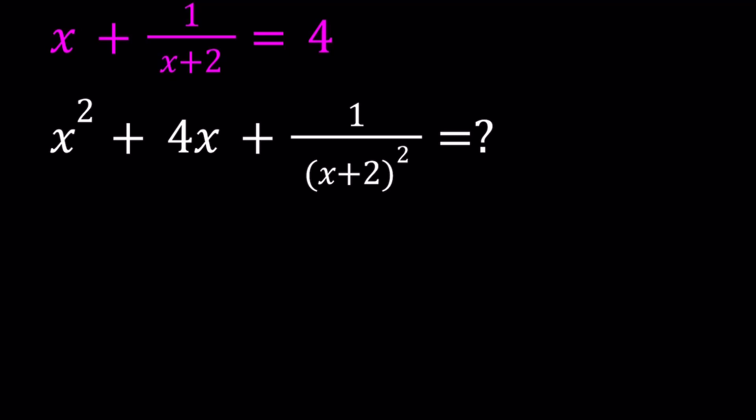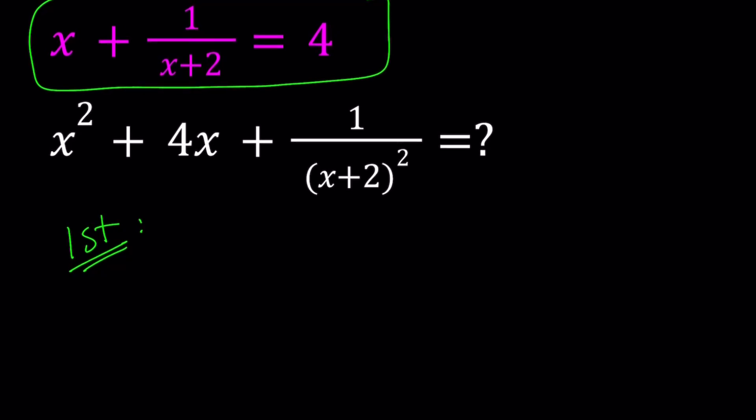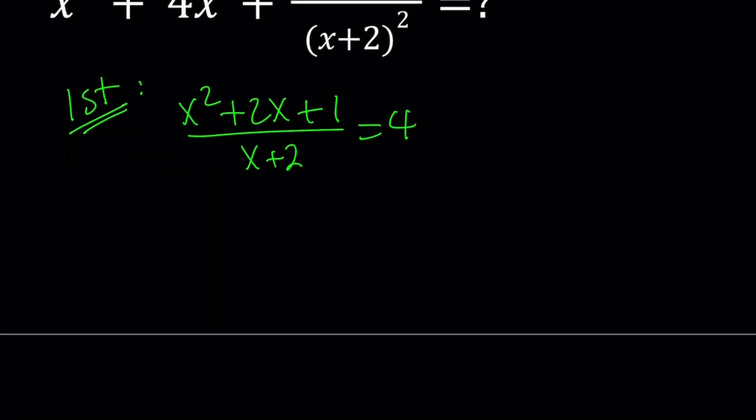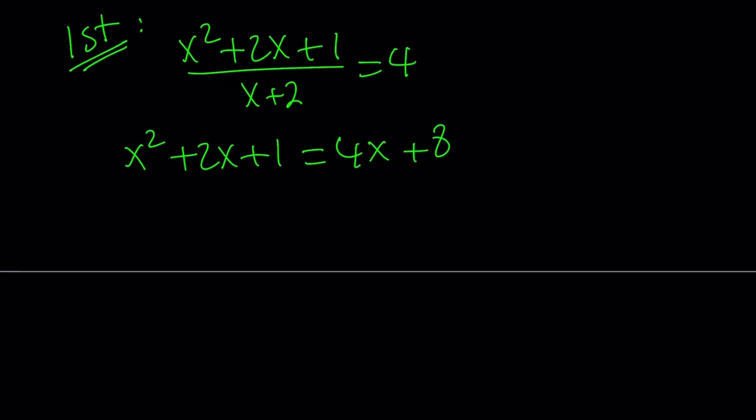So, let's start with the first method. For my first method, I'm going to start working with this expression. Since I don't know the answer to this one, that's what I'm trying to find. I'm going to go ahead and make a common denominator. That's going to give me x squared plus 2x plus 1, and then I will divide this by x plus 2, and that is equal to 4. Now, I'm going to go ahead and cross multiply. x squared plus 2x plus 1 is equal to 4x plus 8. And then I will collect everything on the same side. Subtract 4x, and then subtract 8.